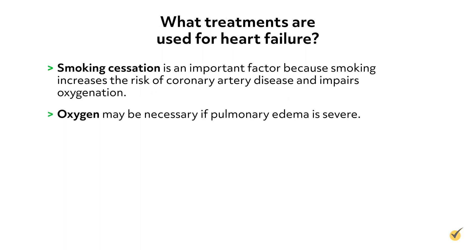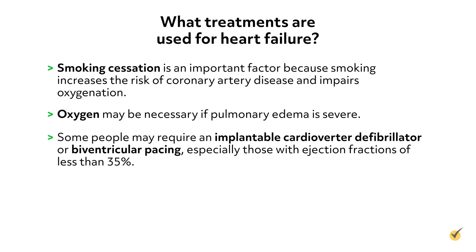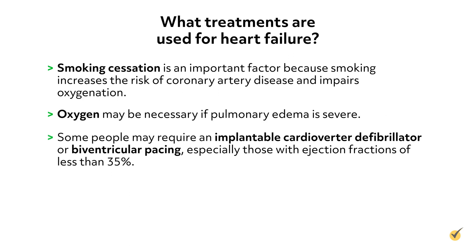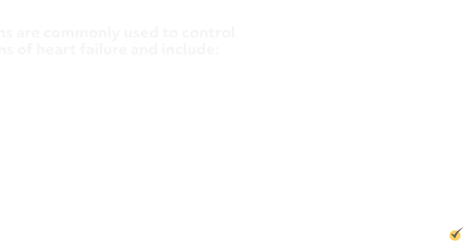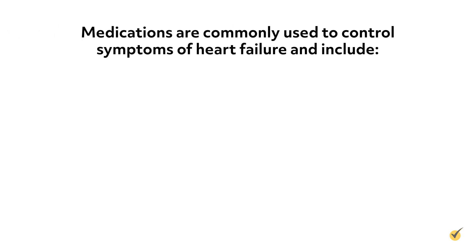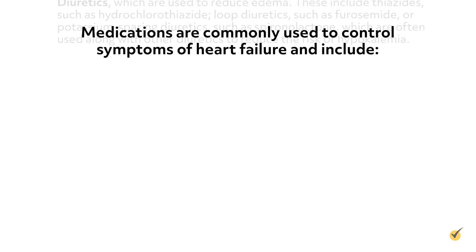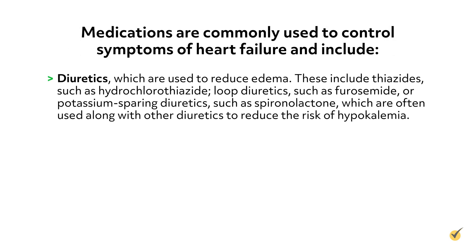Smoking cessation is an important factor because smoking increases the risk of coronary artery disease and impairs oxygenation. Oxygen may be necessary if pulmonary edema is severe. Some people may require an implantable cardioverter-defibrillator or biventricular pacing, especially those with ejection fractions of less than 35%. Medications commonly used to control symptoms of heart failure include diuretics, which are used to reduce edema — including thiazides such as hydrochlorothiazide, loop diuretics such as furosemide, or potassium-sparing diuretics such as spironolactone, which are often used along with other diuretics to reduce the risk of hypokalemia.